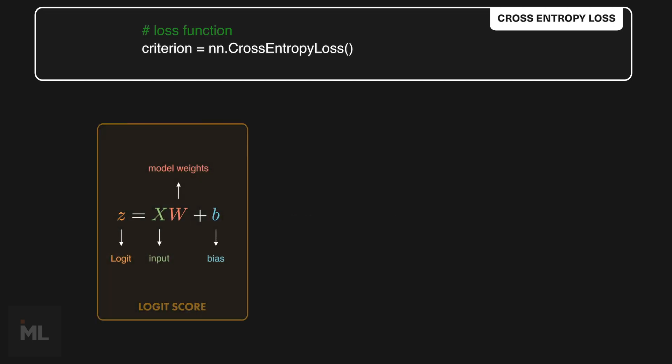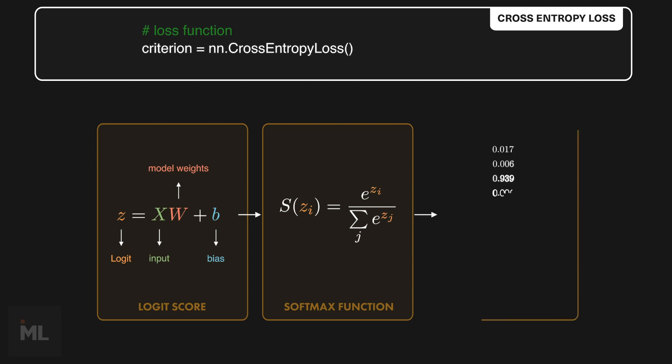After getting the linear weighted sum scores from the network, we need to fit it into a softmax function. Softmax function will normalize the input vector into the range from 0 to 1, which can be interpreted as probability.